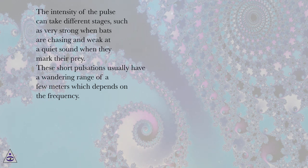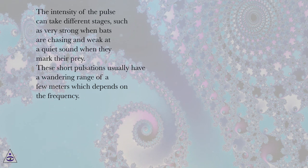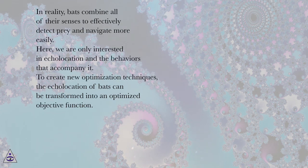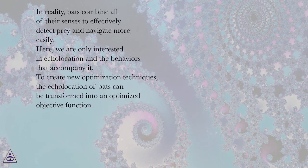These short pulsations usually have a wandering range of a few meters which depends on the frequency. In reality, bats combine all of their senses to effectively detect prey and navigate more easily. Here, we are only interested in echolocation and the behaviors that accompany it.